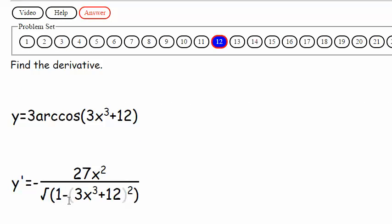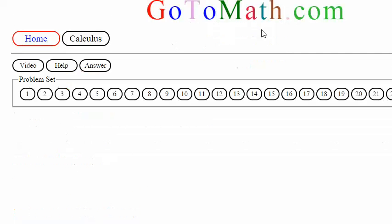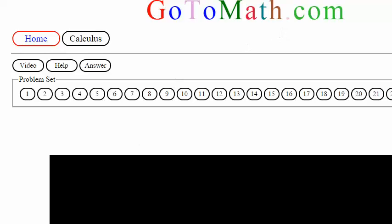Negative 27X squared over 1 minus. Okay, looks good. All right. So you'll need to show up at the party and practice. All right.